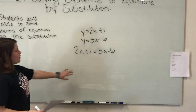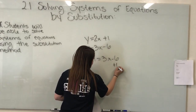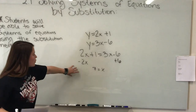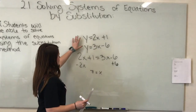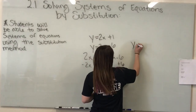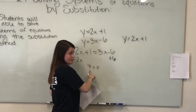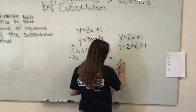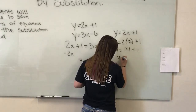You're going to solve for your x value using basic algebra. Subtract 2x and add 6 to both sides, which gives you 7 equals x. Now that you have your x, you can solve for y using any of the equations that have both variables. I'm going to use the top one: y equals 2x plus 1. Substitute the x with 7, so y equals 2 times 7 plus 1, which gives y equals 14 plus 1, so y equals 15.